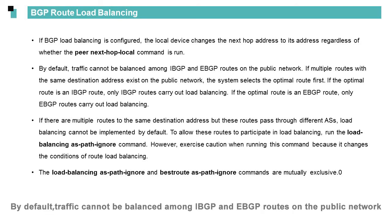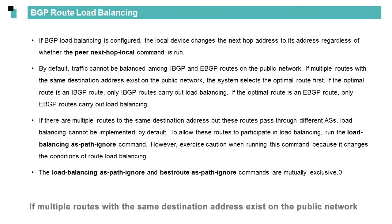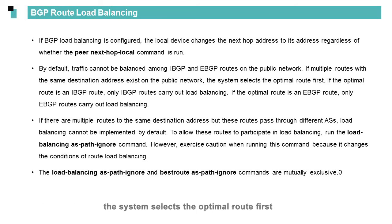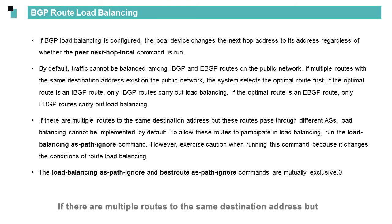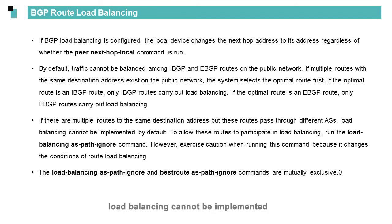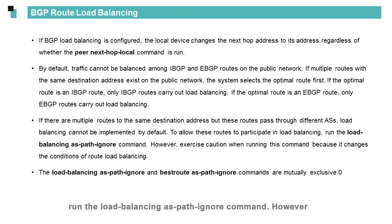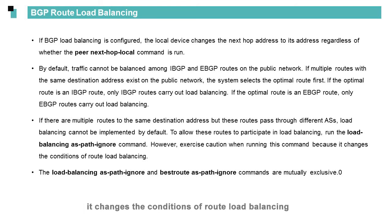By default, traffic cannot be balanced among IBGP and EBGP routes on the public network. If multiple routes with the same destination address exist, the system selects the optimal route first. If the optimal route is an IBGP route, only IBGP routes carry out load balancing. If the optimal route is an EBGP route, only EBGP routes carry out load balancing. If there are multiple routes to the same destination address but these routes pass through different ASs, load balancing cannot be implemented by default. To allow these routes to participate in load balancing, run the 'load-balancing as-path-ignore' command. However, exercise caution when running this command because it changes the conditions of route load balancing.